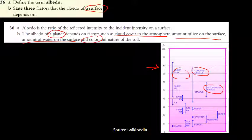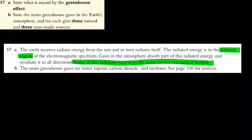Question 37: the main point is to specify that radiated energy is in the infrared electromagnetic spectrum and this radiation is returned to Earth's surface due to re-radiation (scattering) by greenhouse gases back downward.